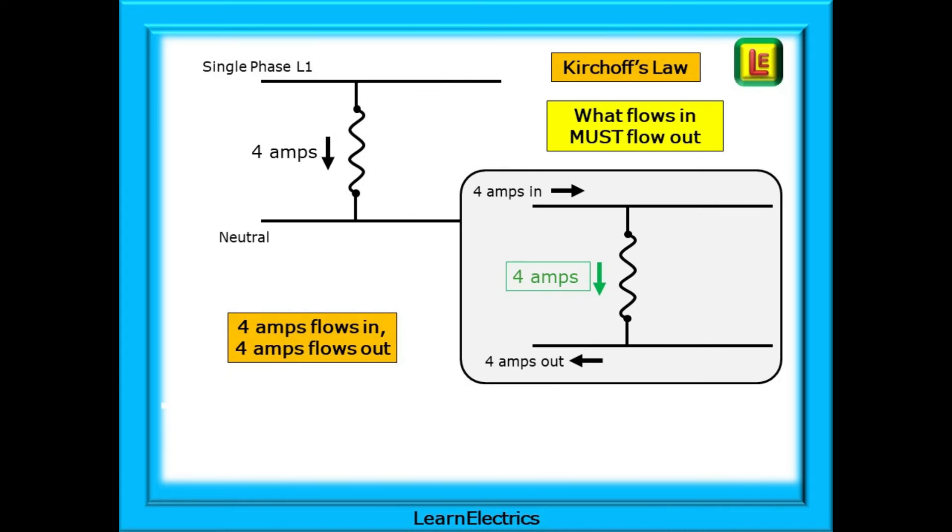In about 1850, a scientist called Gustav Kirchhoff formulated an electrical law that has become known as Kirchhoff's current law. Long before we had multimeters and multifunction testers, he was able to tell us that the algebraic sum of all the currents flowing into and out of a node must equal zero. In other words, what flows in must flow out. They are always equal and opposite.